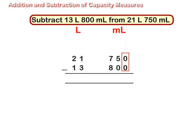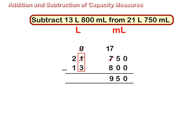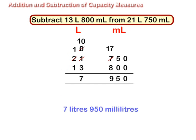Subtract milliliters from milliliters and liters from liters like whole numbers. Decompose if needed. The difference is 7 liters, 950 milliliters.